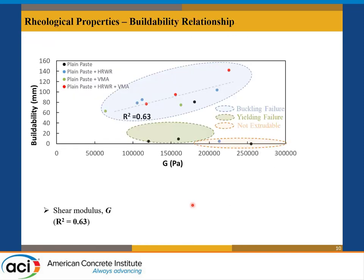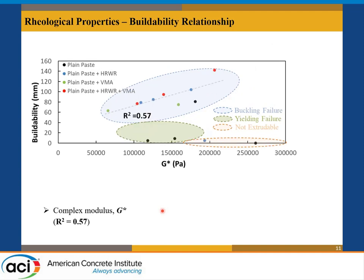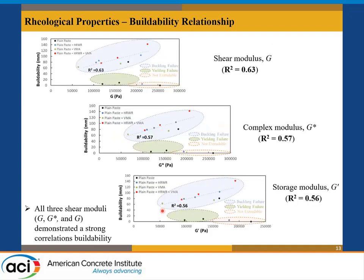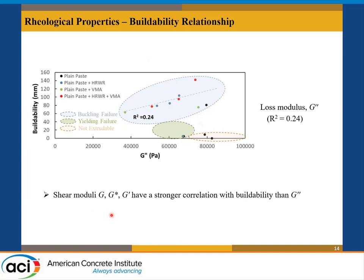Given the rheology and buildability, let's look at what happens when you put them together. Looking into shear modulus G of all of these systems — focusing on the blue envelope where buckling is relevant — shear moduli demonstrated a relatively strong correlation with buildability. The same happens with complex modulus G* and storage modulus G'. If you put them all together, G*, G', and G demonstrate a strong correlation with buildability. That is not the case when you look at loss modulus G''. G, G*, and G' demonstrate a stronger correlation with buildability than loss modulus.